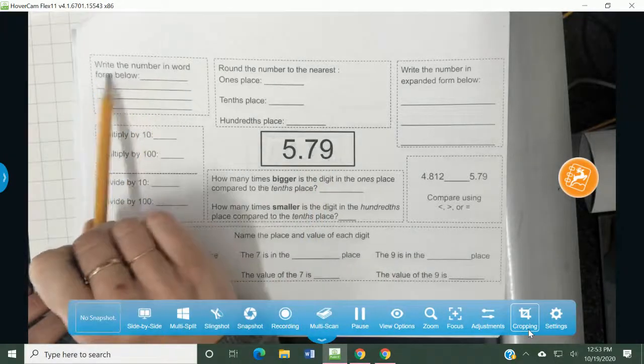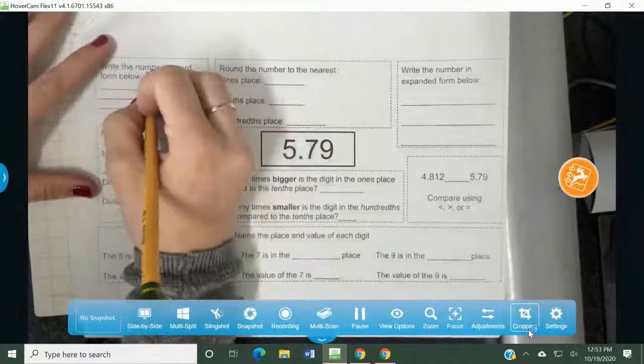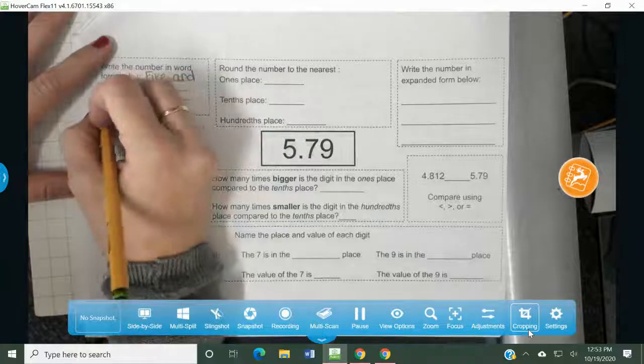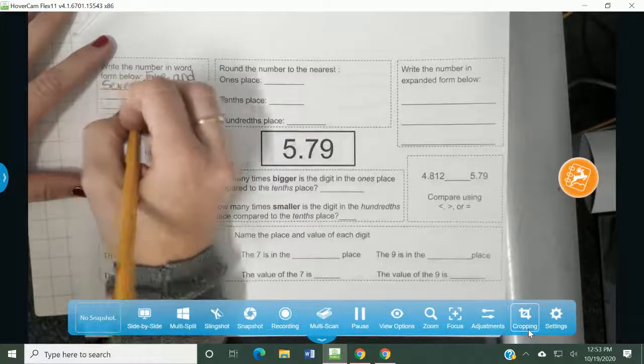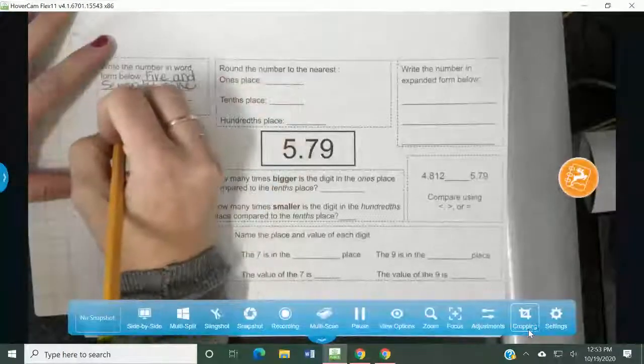Five and seventy nine hundredths. It says write the number in word form right here. So we're going to write it out. We're going to write five and the and stands for the decimal. Seventy nine hundredths.